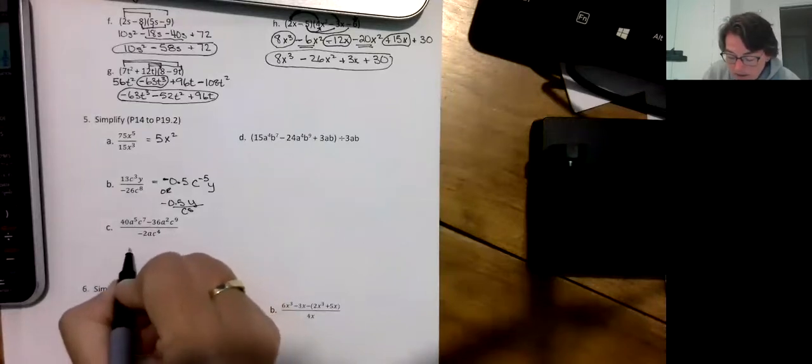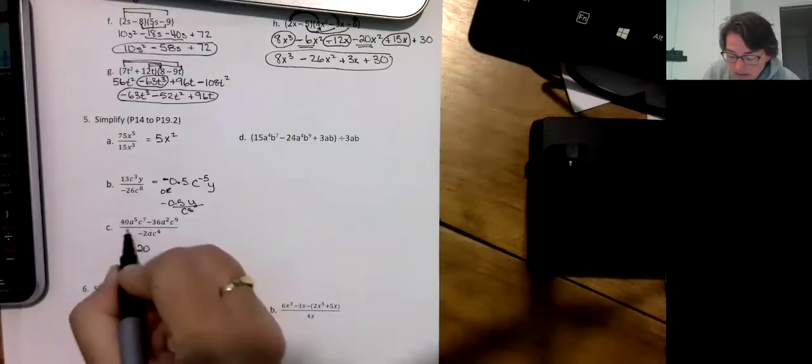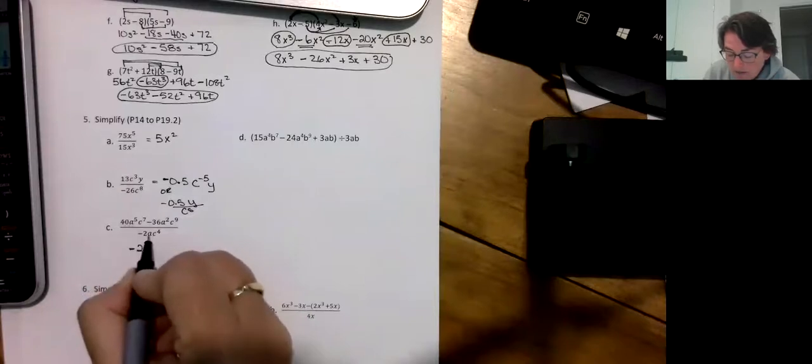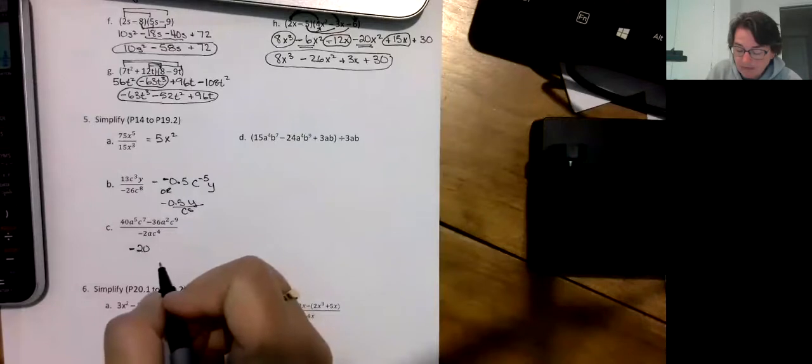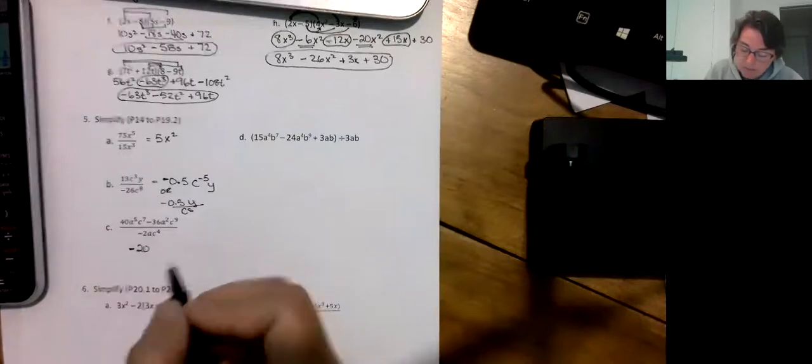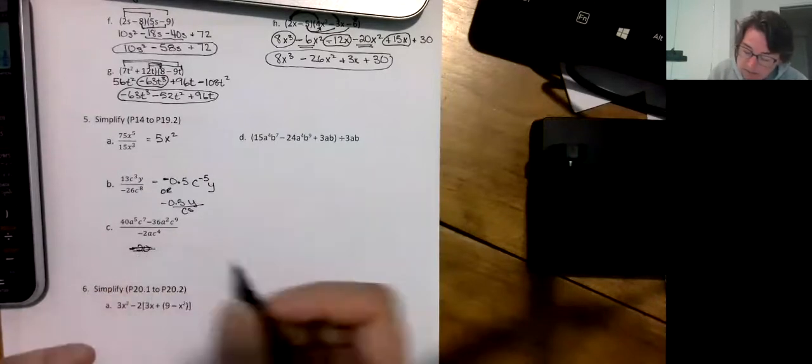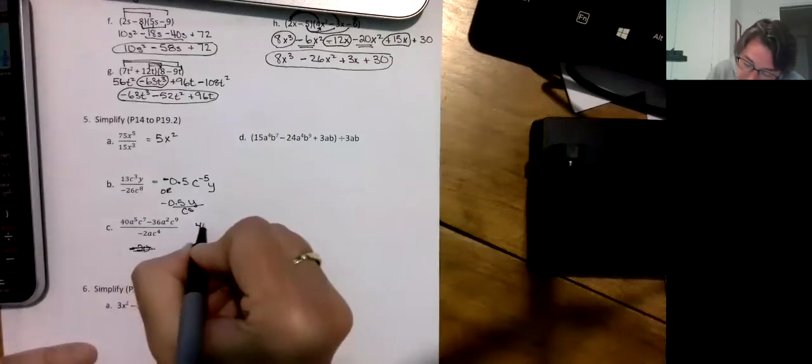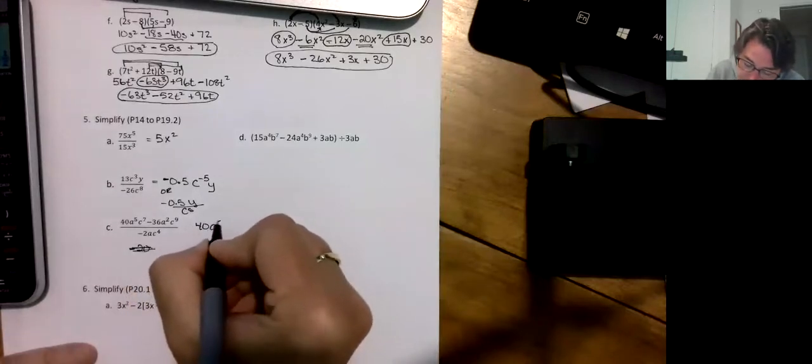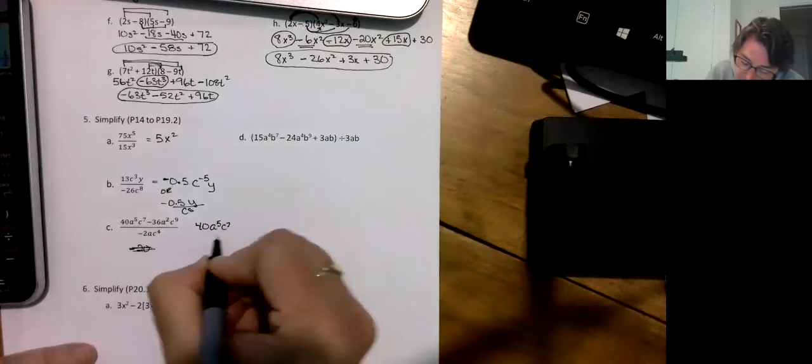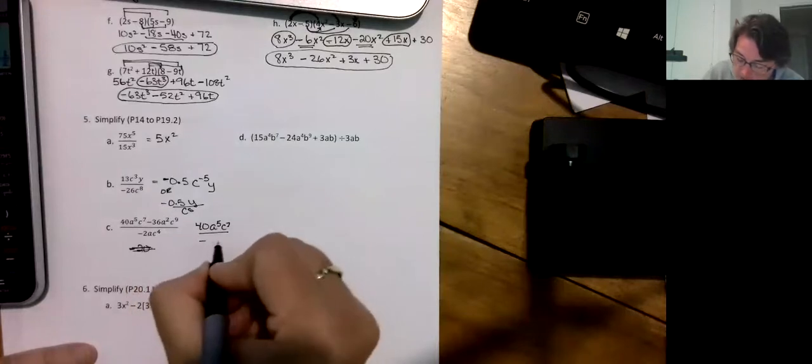A couple of things happening there because we still follow the rules. So 3 minus 8 gives you the minus 5, and then y, there was no y at the bottom so we'll just drive them along. I started thinking that I was just doing an answer key for me and I kind of forgot you were there, sorry don't take that personal.